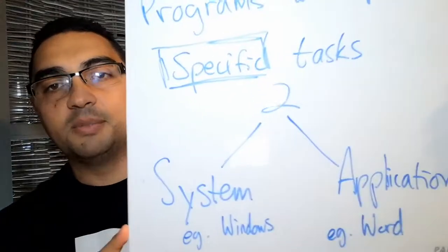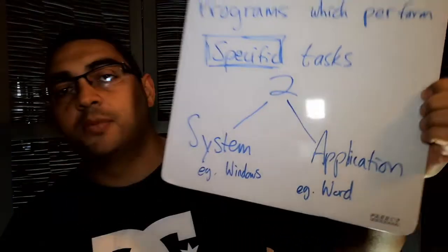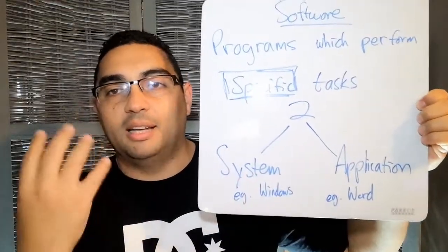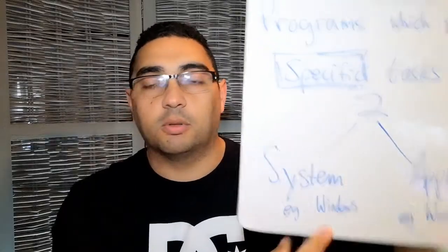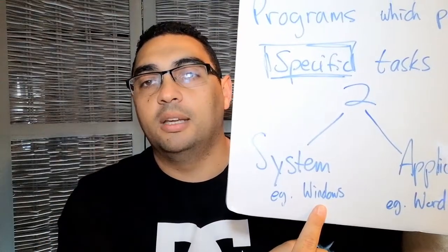There are two types of software: system software and application software. System software is a program that manages the entire computer system — for example, Windows. So if they ask what software is, it's a program that performs specific tasks. If they ask what system software is, it's a program that manages the entire computer system, and an example would be Windows.